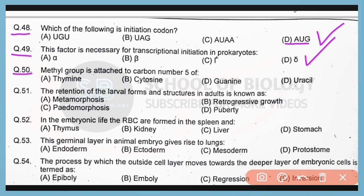Question number 50. Methyl group is attached to the carbon number 5 of which nitrogenous base? So correct answer is option A.